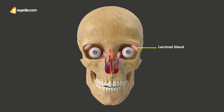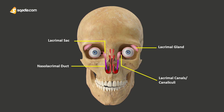It supports the lacrimal sac, which is the upper dilated end of the nasolacrimal duct, and is lodged in a deep groove formed by the lacrimal bone. It also supports the lacrimal canaliculi, or the lacrimal canals, which are the small channels in each eyelid that drain the lacrimal fluid from the lacrimal puncta to the lacrimal sac. This forms part of the lacrimal apparatus that drains the lacrimal fluid from the surface of the eye towards the nasal cavity, and this is how the lacrimal bone makes up the nasolacrimal canals.